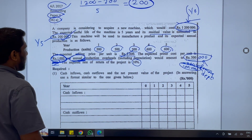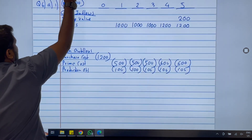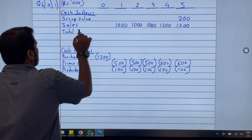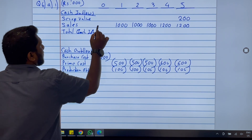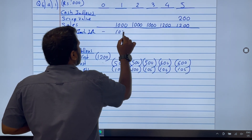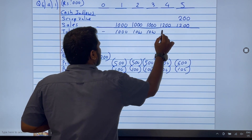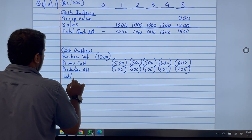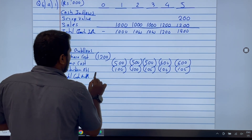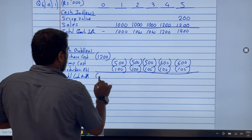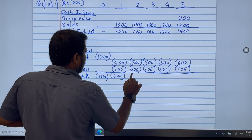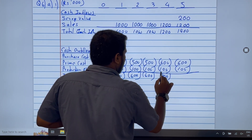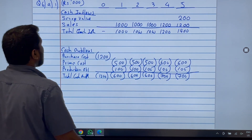Now let's total the figures. Total cash inflows: year 0 is nil; years 1, 2, 3 are 1,000 each; year 4 is 1,200; year 5 is 1,400 (including the 200 scrap). Total cash outflows: year 0 is 1,200; years 1, 2, 3 are 600 each; years 4 and 5 are 700 each.